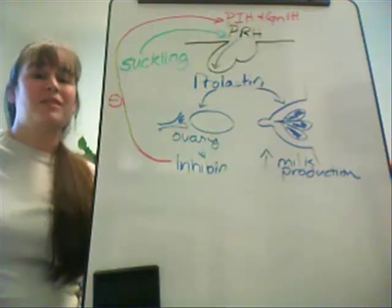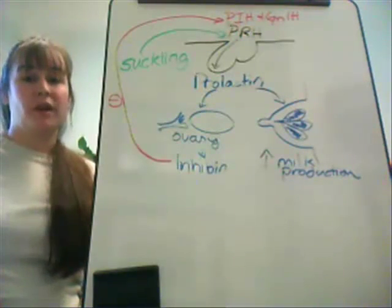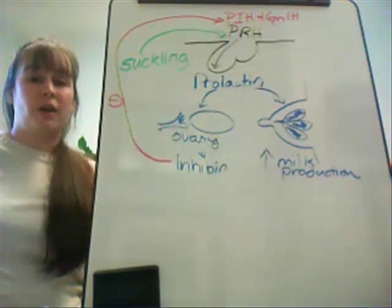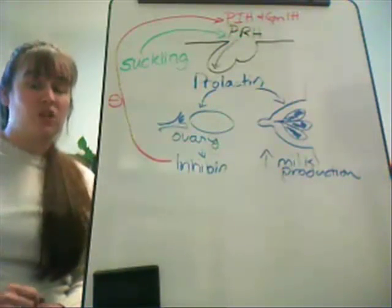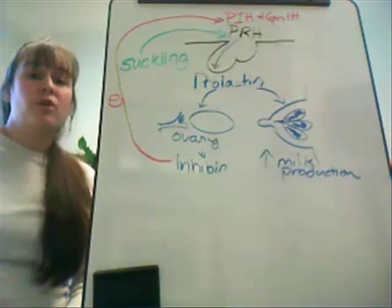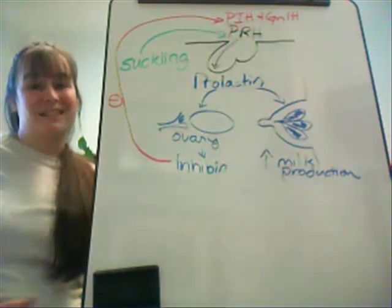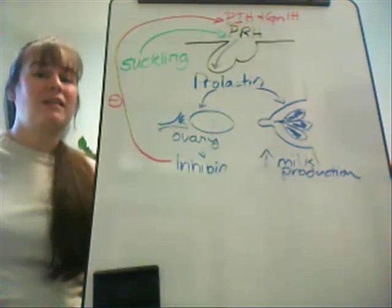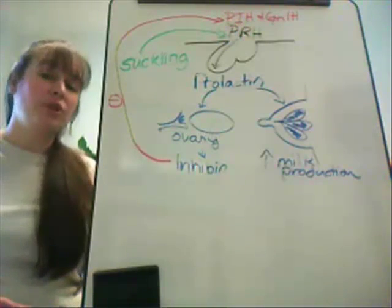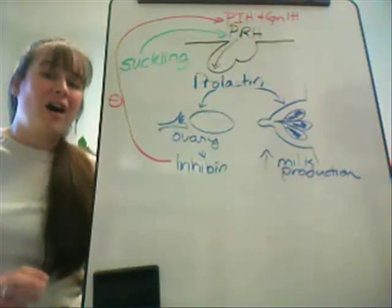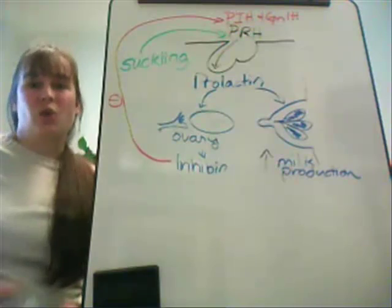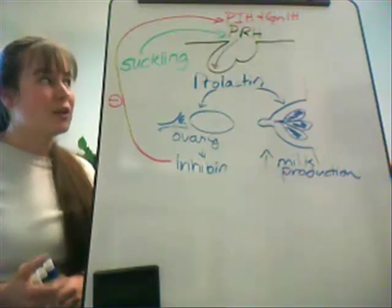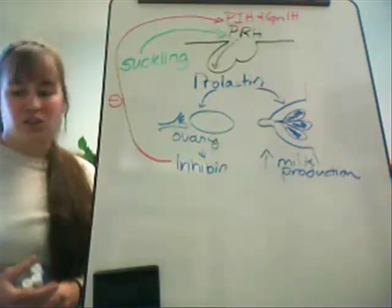There are some cultures where this system works very well, for example in the Native American population. But those of European descent see that this system really breaks down. A female who depends on lactation as a form of birth control can often be surprised when she ends up pregnant considerably earlier than she thought she would be.